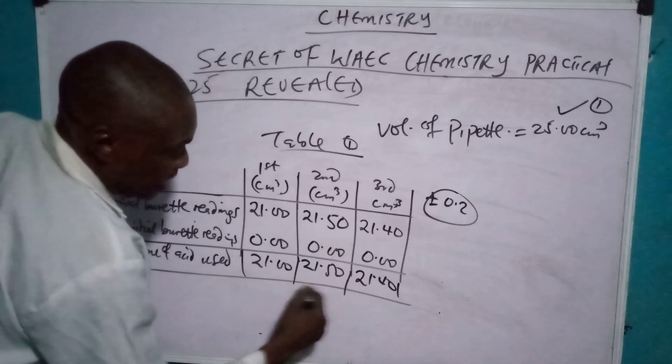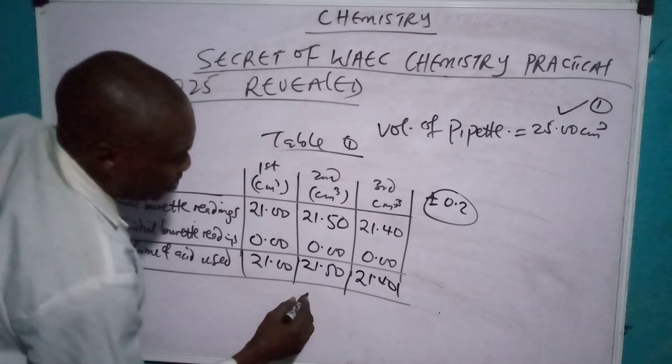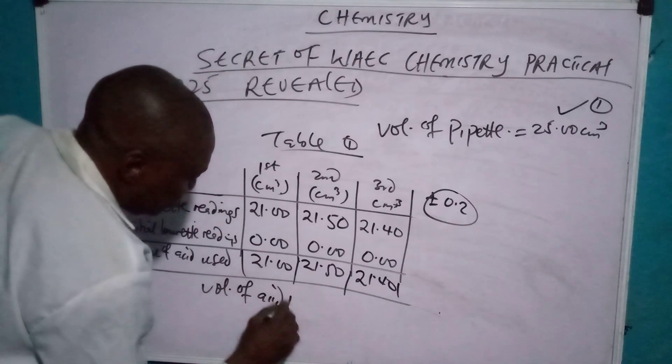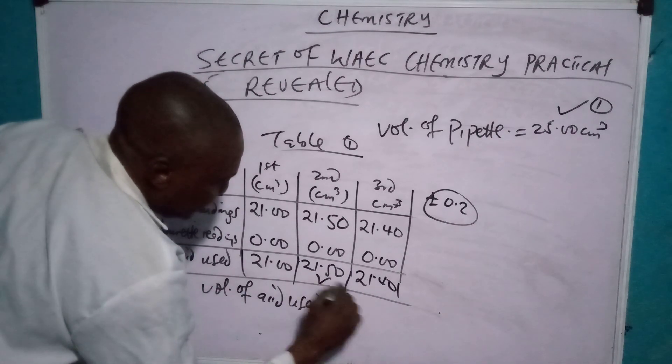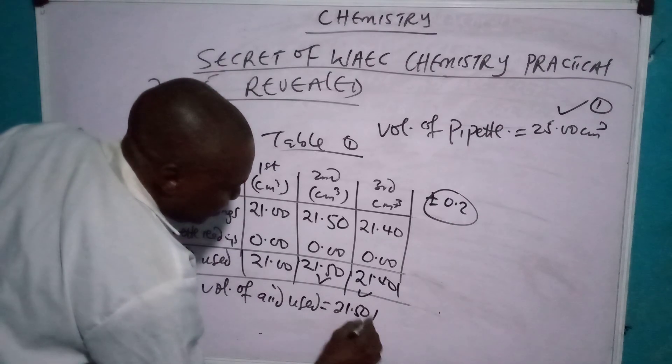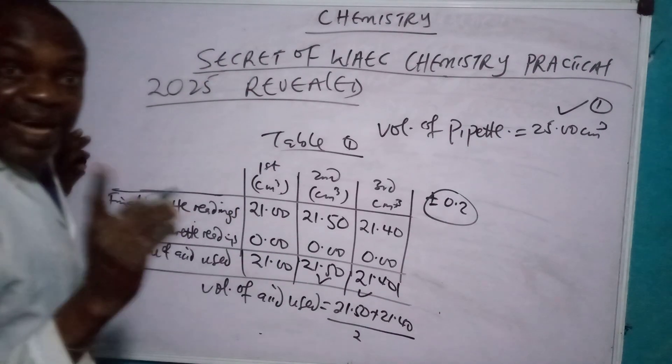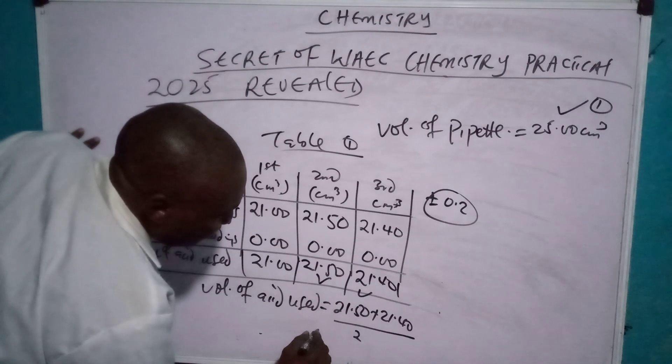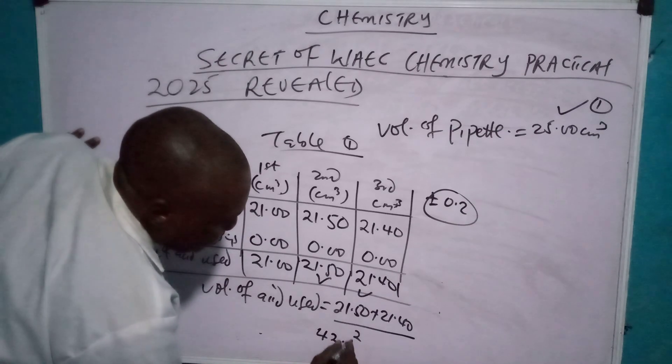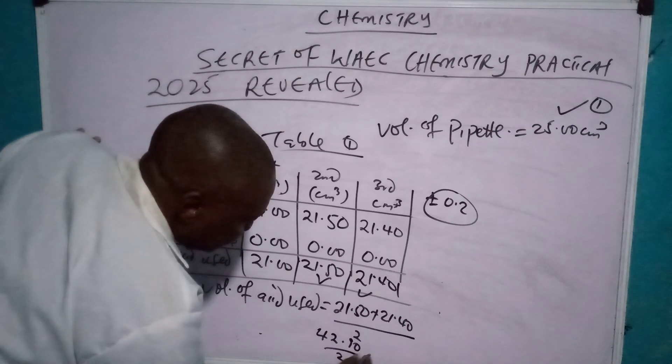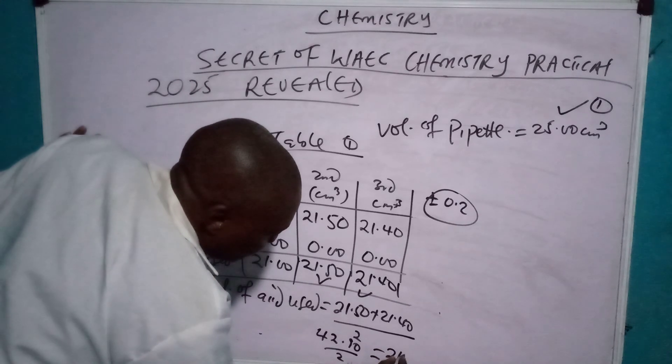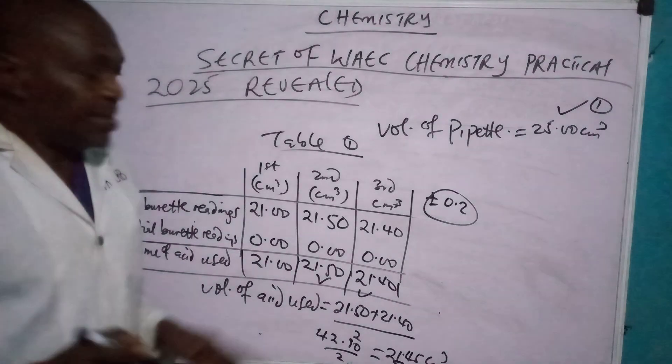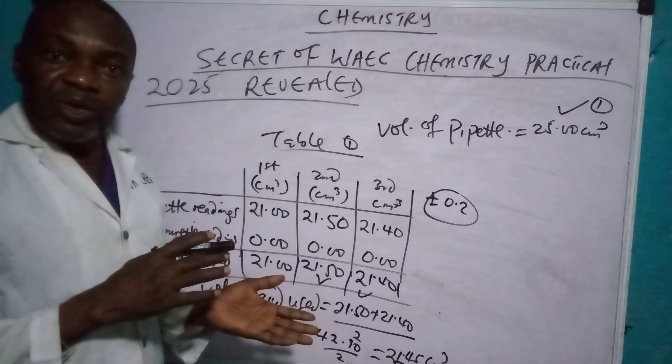Then you now subtract. You now add the two that are concordant. That's they are close. You now have volume of acid used. So that's this one and this one. 21.50 plus 21.40 over 2. Remember, you are calculating average. You have 42.90 over 2. It gives you 21.45 cm³. So this is the first thing you are going to have. Remember, the value you are having must be close to the one of your teachers.